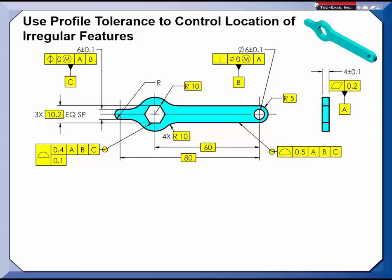When it comes to irregular features of size, profile tolerance can be used to locate them. This drawing shows a hexagonal feature being controlled by composite profile tolerance.